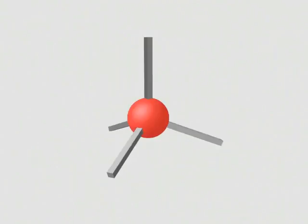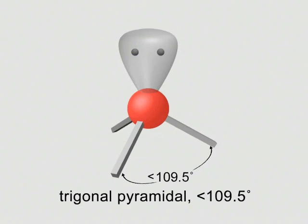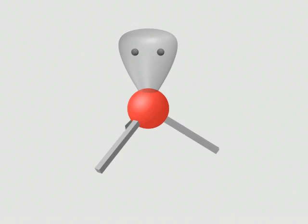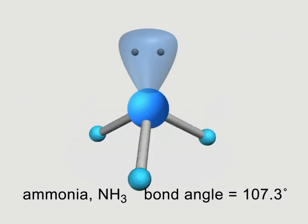With one of the four electron groups a lone pair, the shape is trigonal pyramidal. Since a lone pair exerts greater repulsions than a bonding pair, the bond angle is less than 109.5 degrees. Ammonia is a common molecule with this shape. Its bond angle is 107.3 degrees.